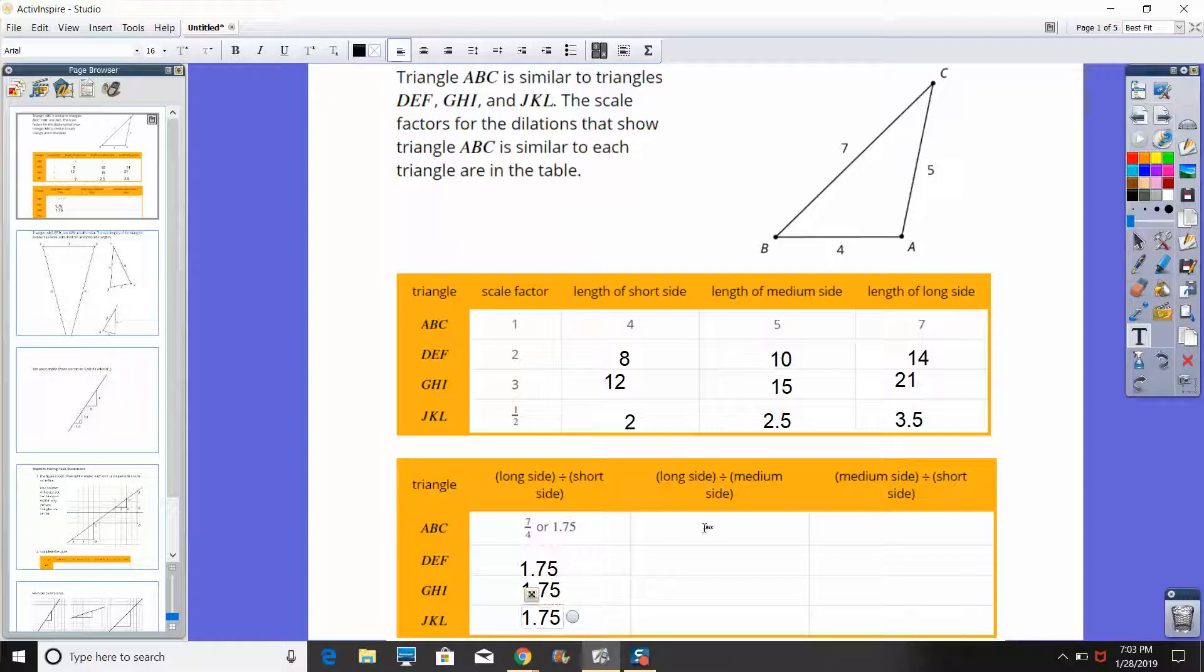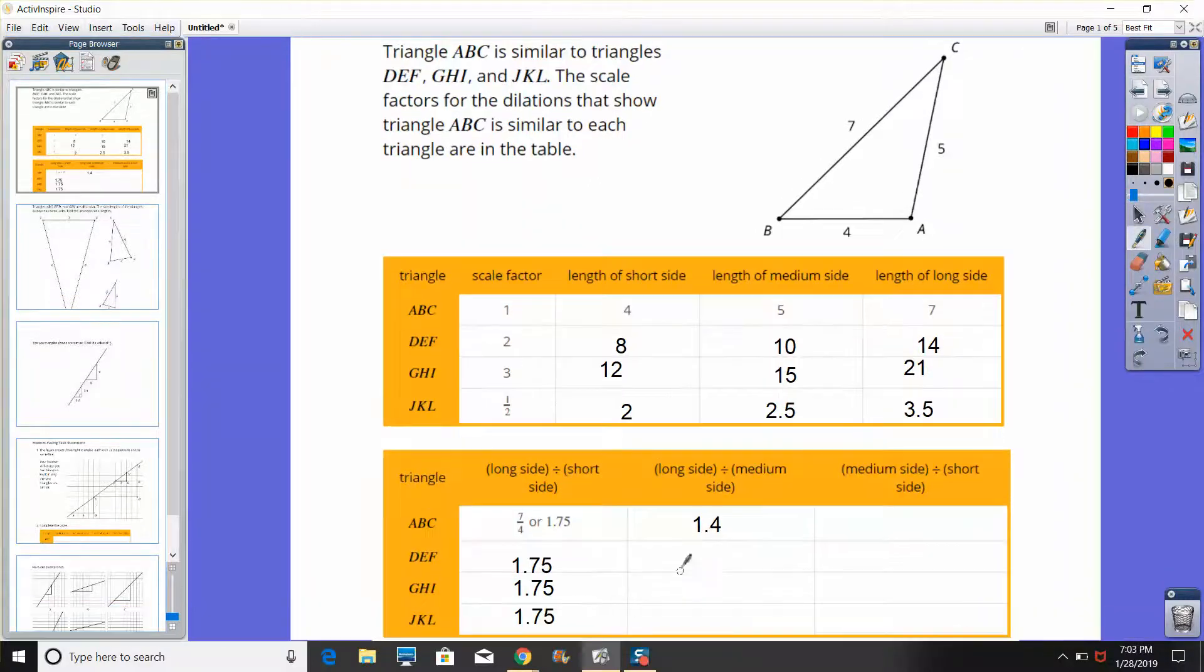If I were to do the long side divided by the medium side, the long side is 7 divided by the medium side of 5, I would get 1.4 and I would notice that 1.4 would actually be all the way down as well. I get to put 1.4 all the way down.